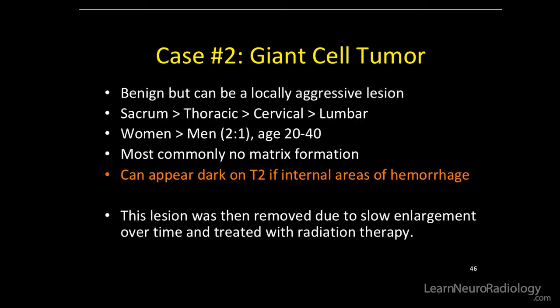This was a giant cell tumor. They are benign lesions, but they can be locally aggressive over time and grow outside the vertebral body and into adjacent soft tissue structures. The sacrum is the most common location. Women are more affected than men, and there's usually no matrix formation with these lesions. They can appear dark on T2 due to internal hemorrhage, and that's the key to remember.